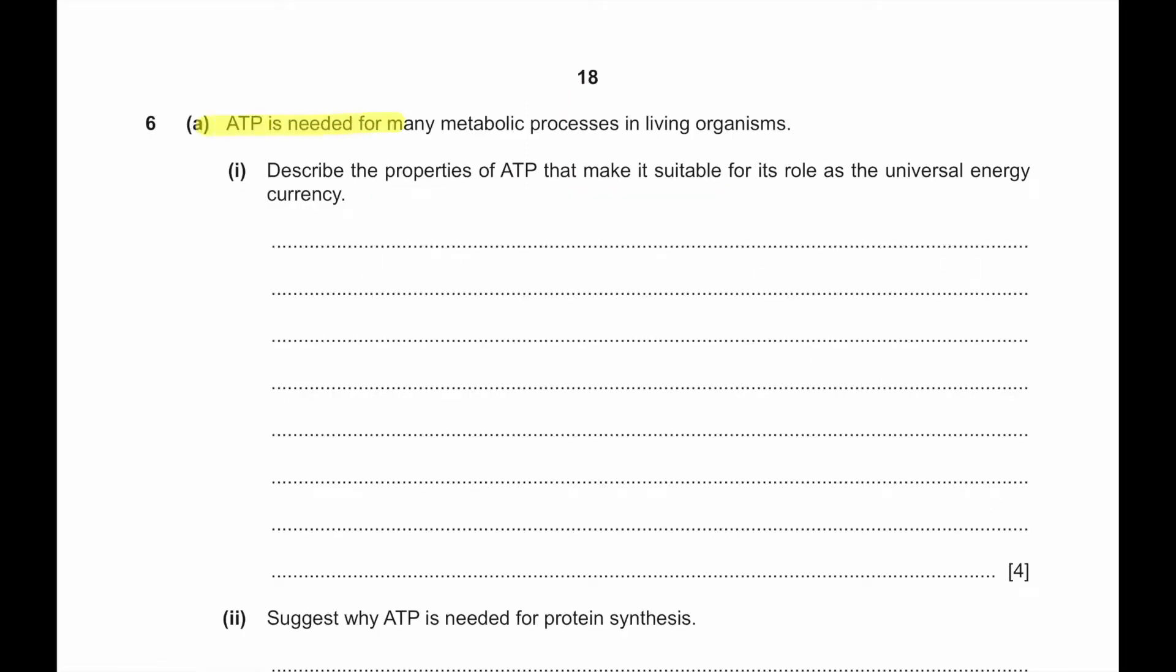Question 6a: ATP is needed for many metabolic processes in living organisms. Describe the properties of ATP that make it suitable for its role as the universal energy currency. ATP stands for adenosine triphosphate. It is very water soluble, so it is easily transported around the cell. ATP can easily lose its phosphate group when it is hydrolyzed by any ATPase enzyme.